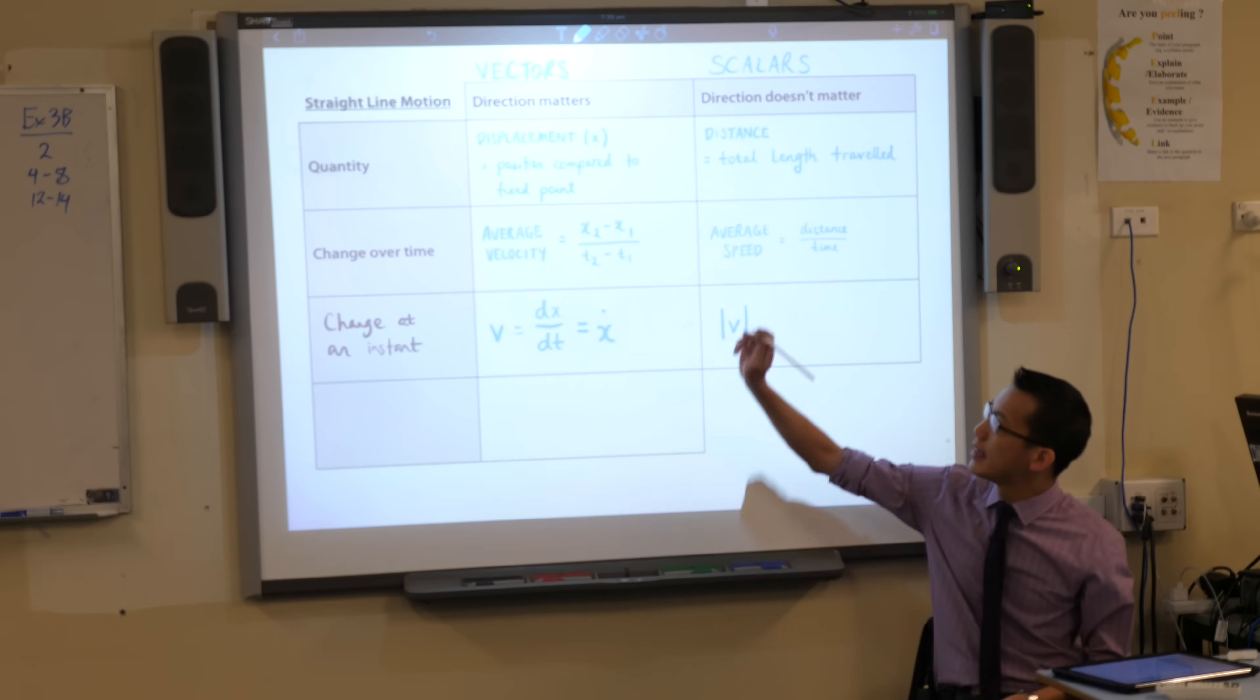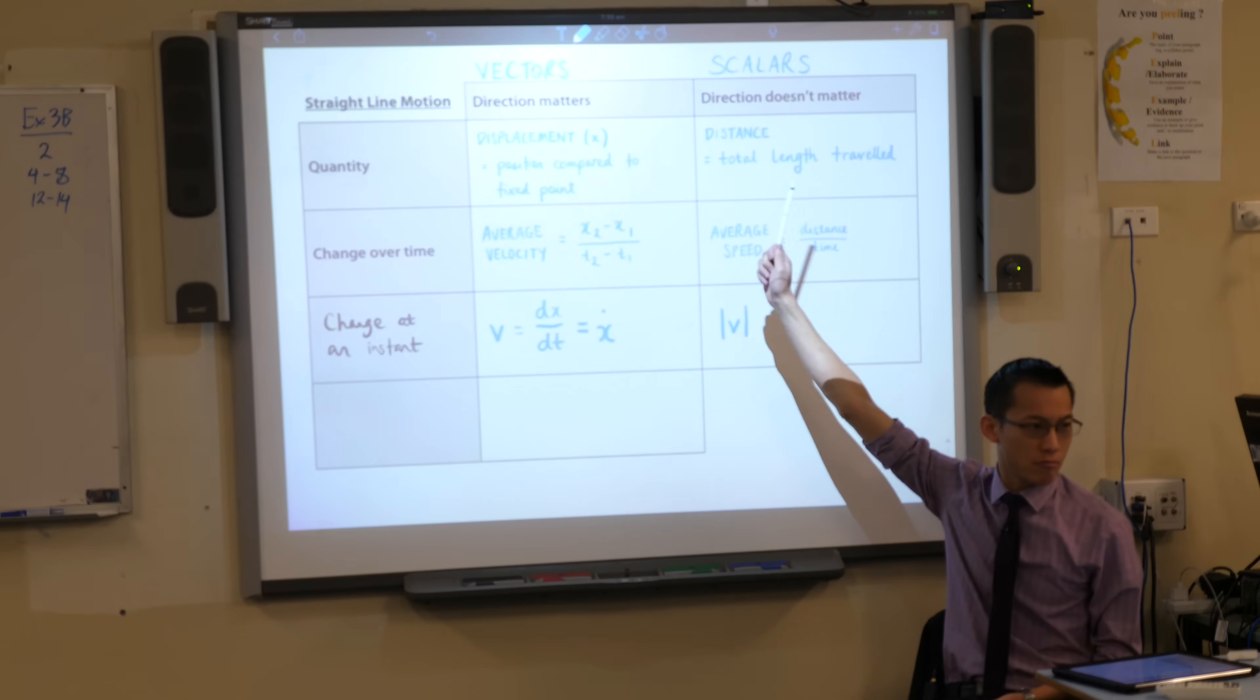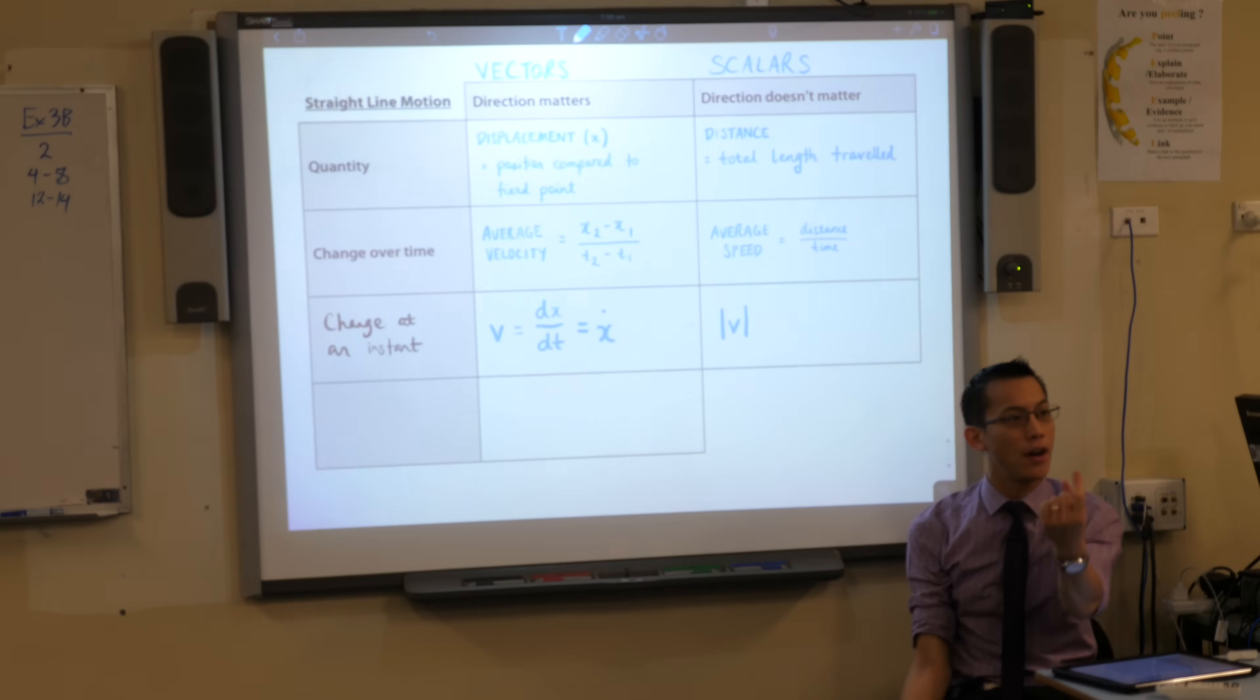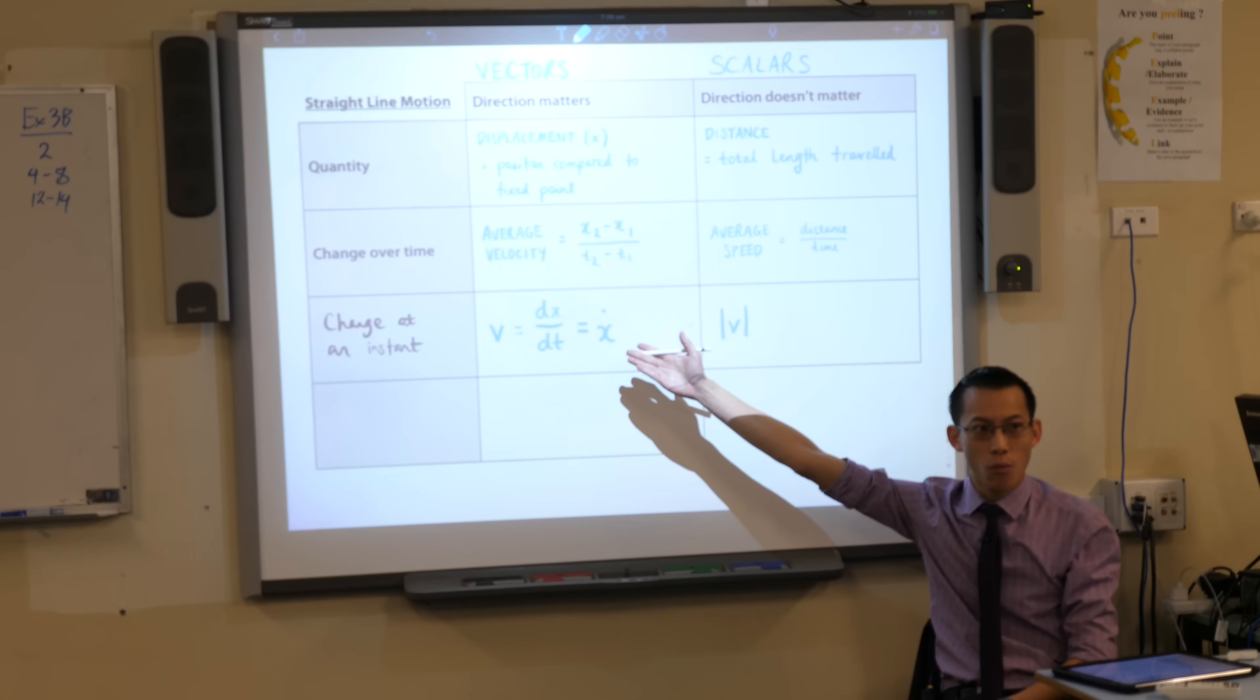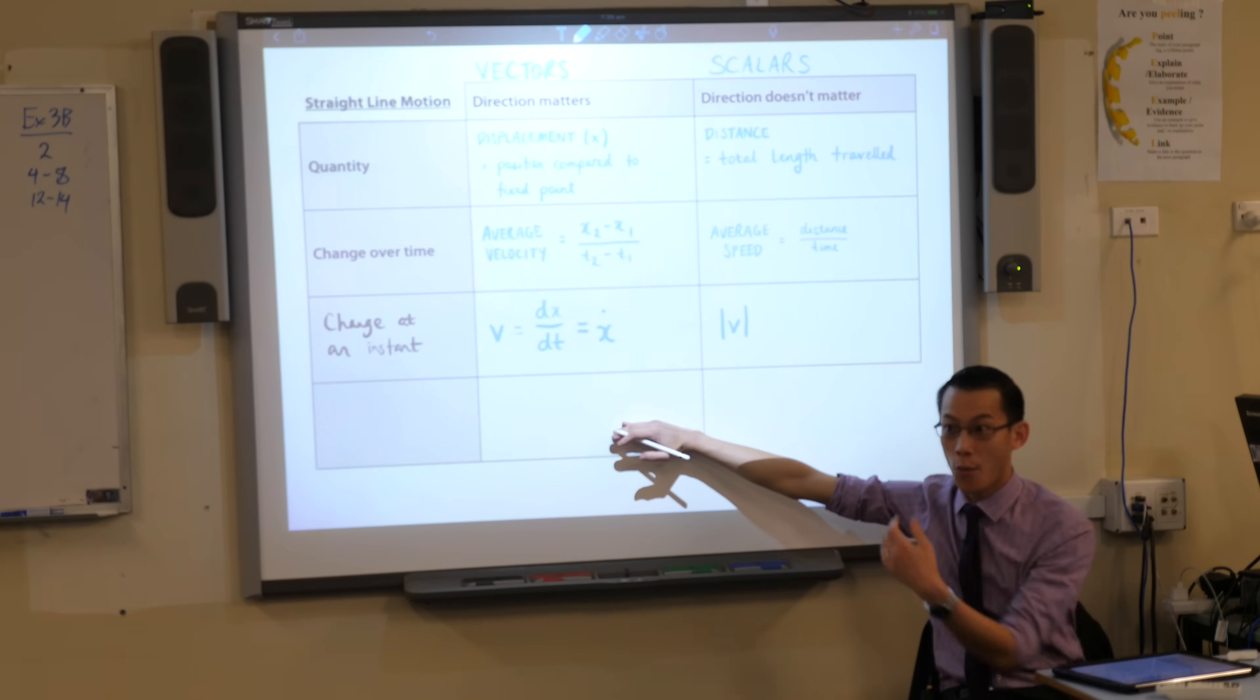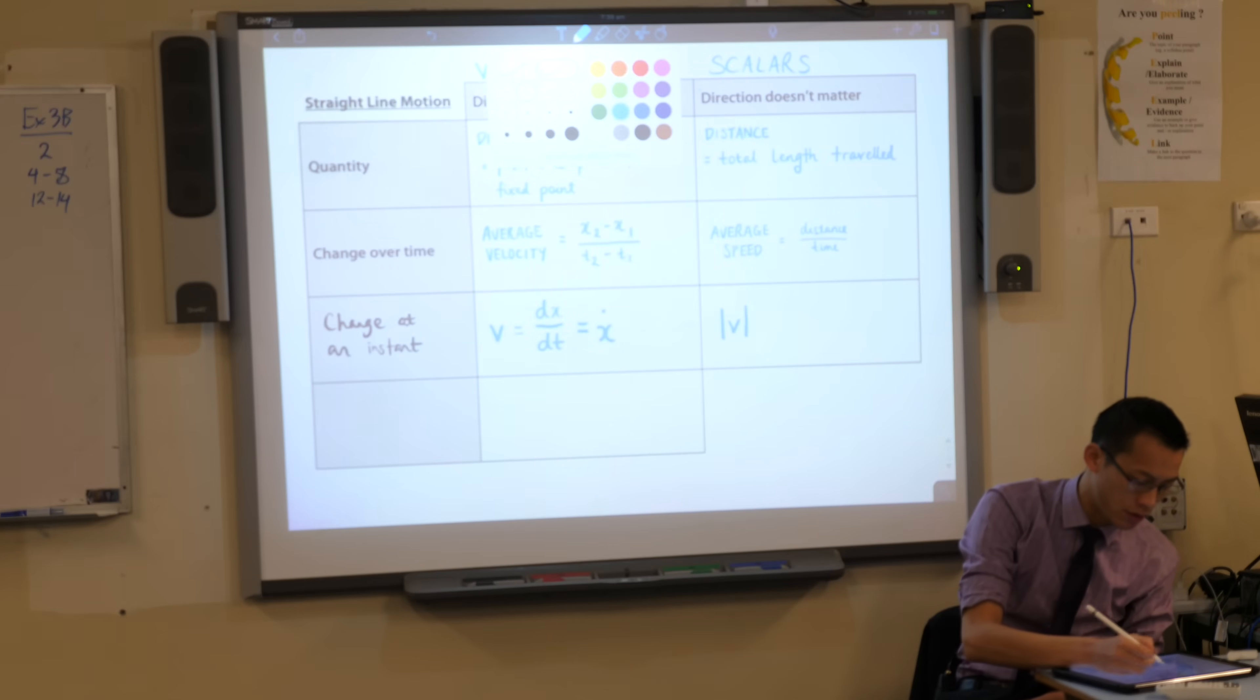Now we go from the quantity, displacement, distance, down to this change at an instant by way of a first derivative. What would happen if we differentiated another time? Well if you think about how velocity is changing over time, we have a name for that concept, we call it acceleration.